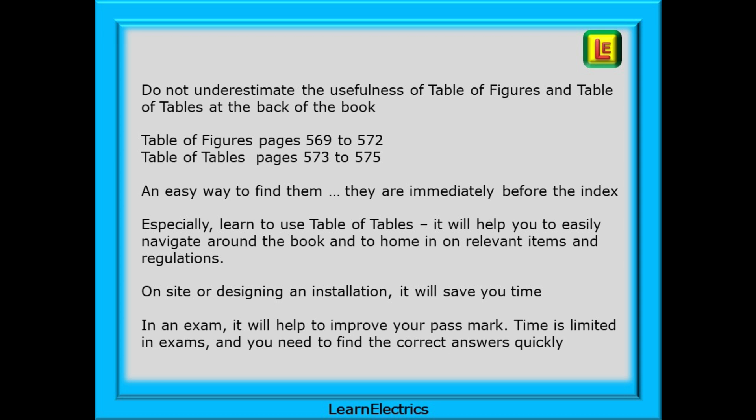In summary then, do not underestimate the usefulness of table of figures and table of tables at the back of the book. Table of figures is on pages 569 to 572 and table of tables is found on pages 573 to 575. An easier way to find them? They are immediately before the index and that's how I find them. Especially, learn to use table of tables.